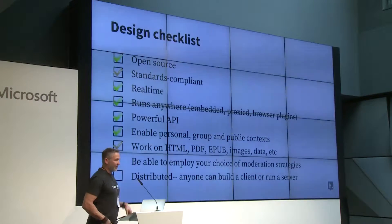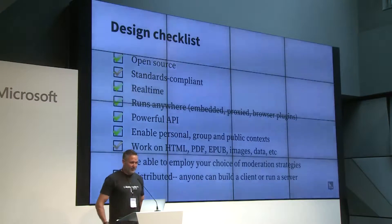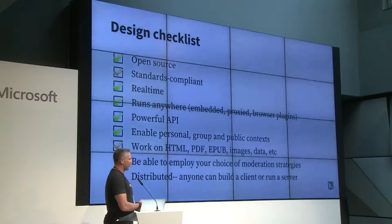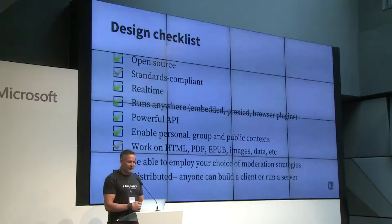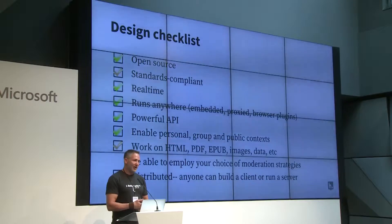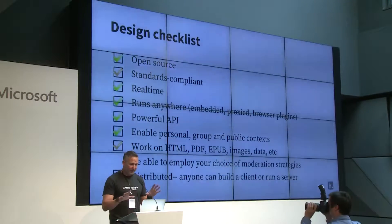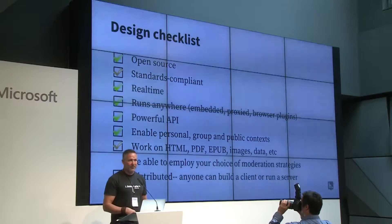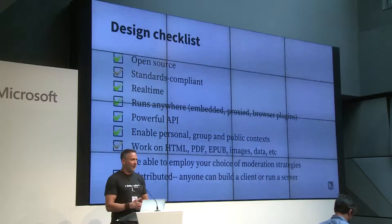Here's a rough checklist of things we care about: open source, standards compliant. The green items are things we're doing pretty well now; the brown check marks are ones we still have work to do on. We've just shipped an early serialization of the data model, but there's a lot more to do — the data model is still settling down — and protocol as well. We work on HTML and PDFs, but there are a lot more formats on the web, so we have work left to do there.